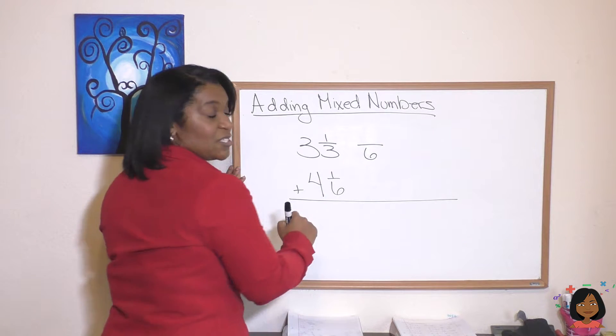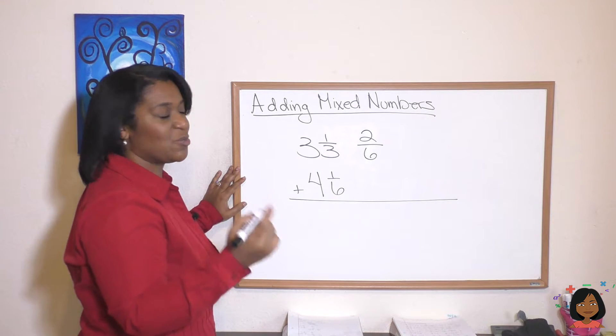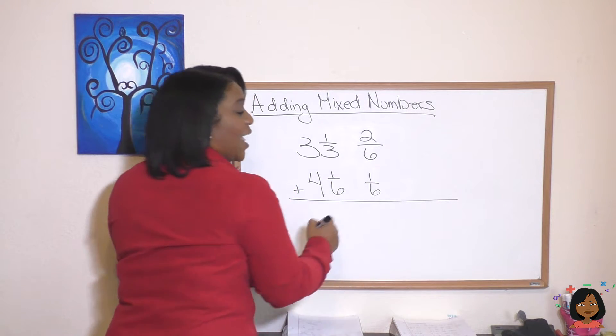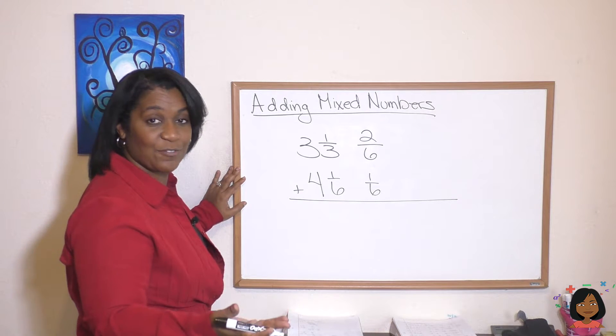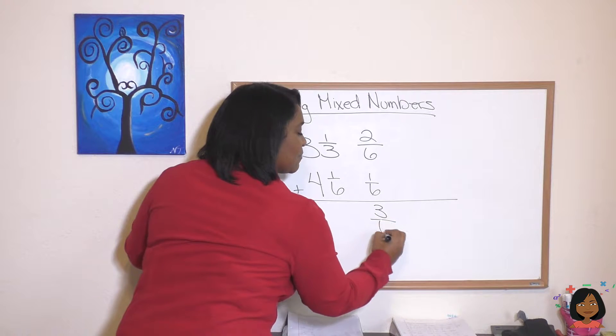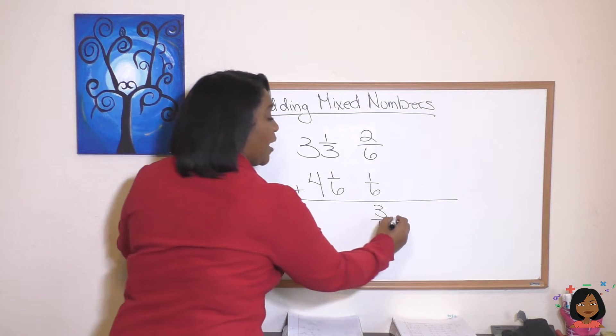which is going to be three times two is six. So one times two is 2/6. And let's leave our 1/6 as is. Now we can add our fractions. 2/6 plus 1/6 is 3/6. And while I'm here, I might as well simplify that piece down to 1/2.